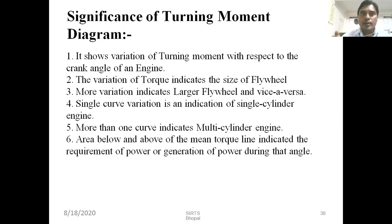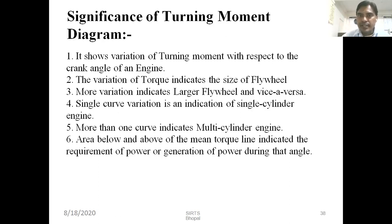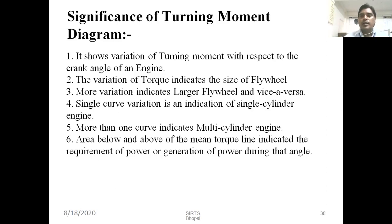The variation of torque indicates the size of the flywheel — we can determine the size of the flywheel by the variation of torque. More variation indicates a larger flywheel and vice versa. A single curve variation is an indication of a single cylinder engine. More than one curve indicates a multi-cylinder engine. The area above the mean torque line indicates the requirement of power generation during that crank angle, and we can calculate how much power is required or consumed by the engine.